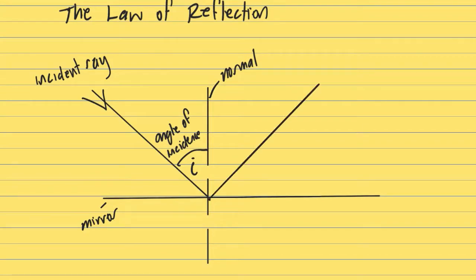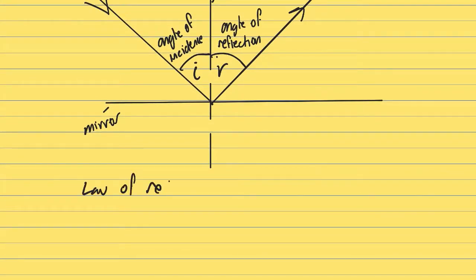The law of reflection states that when a ray of light reflects off a surface, the angle of incidence is equal to the angle of reflection.